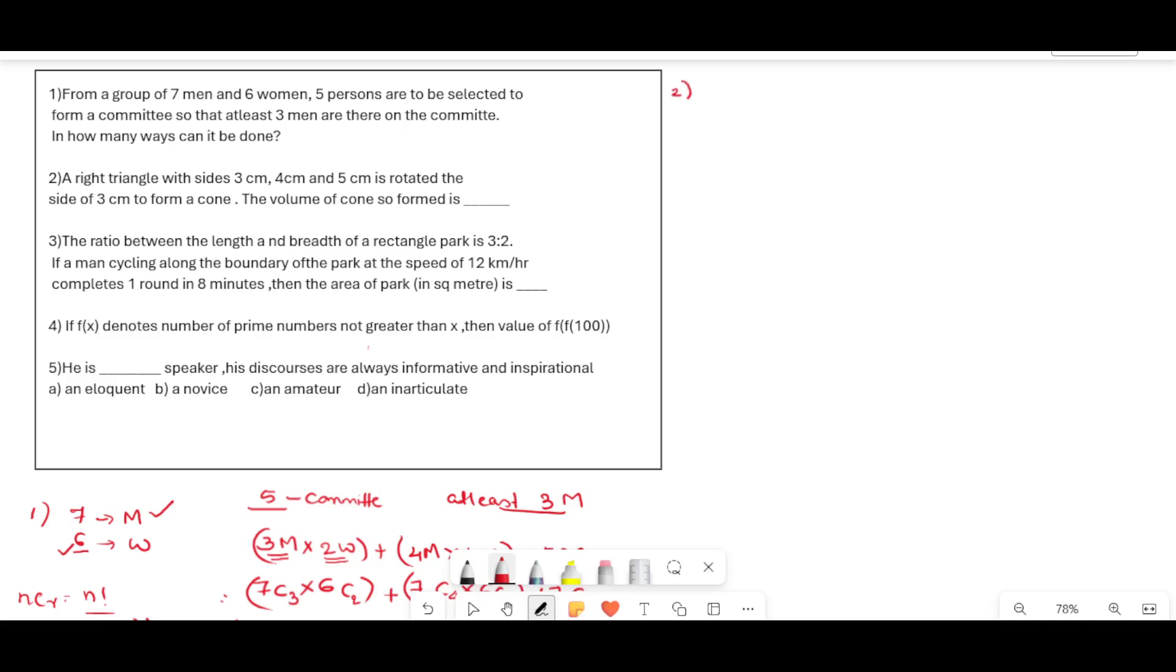This is the second question. We have a right triangle 3 cm, 4 cm and 5 cm. Now this cone is rotated at the side of 3 cm, so we will get a cone. When it is rotated in this way we get a cone. This is 3, this is 4. Now we get the radius of the cone as 3 cm. This is the radius of the cone, and the height is 4 cm.